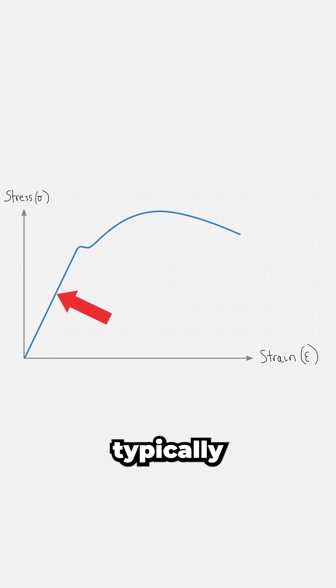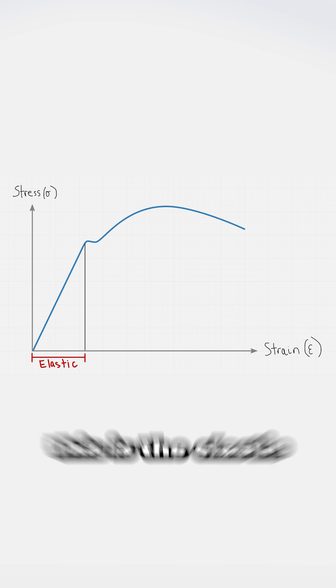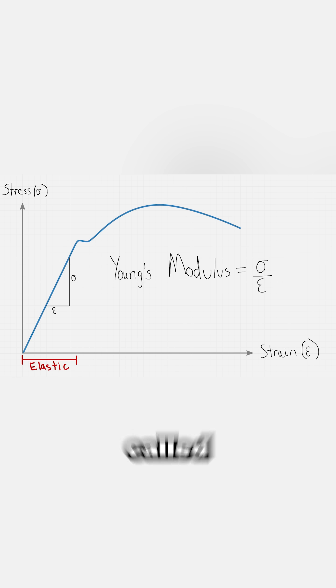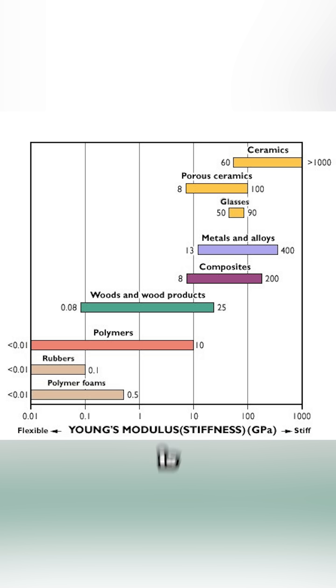The first part of the curve is typically linear for most metals and engineering materials. This is the elastic region. If you stop pulling here, the material returns to its original shape. The slope of this part is called Young's modulus and it tells us how stiff the material is.